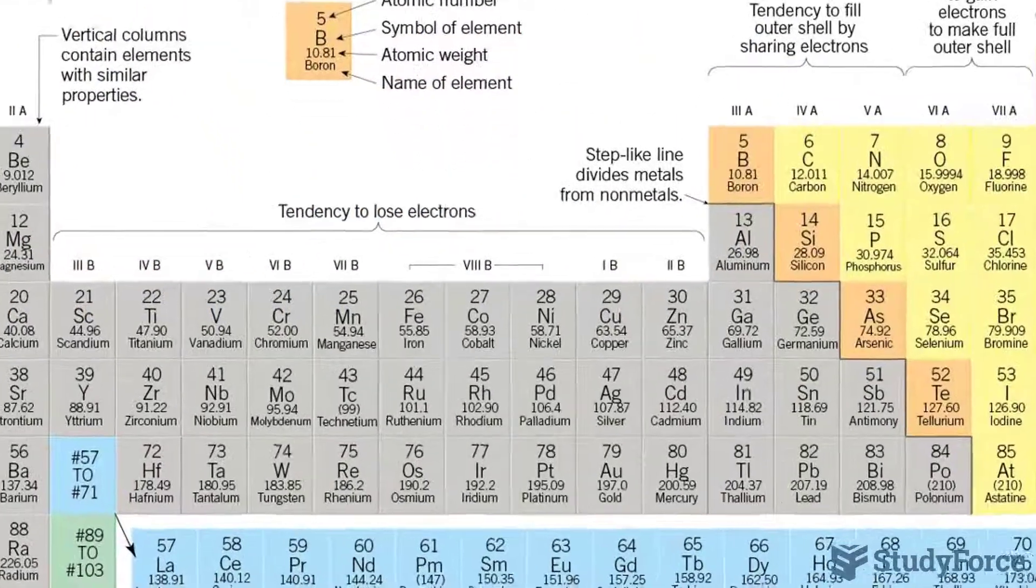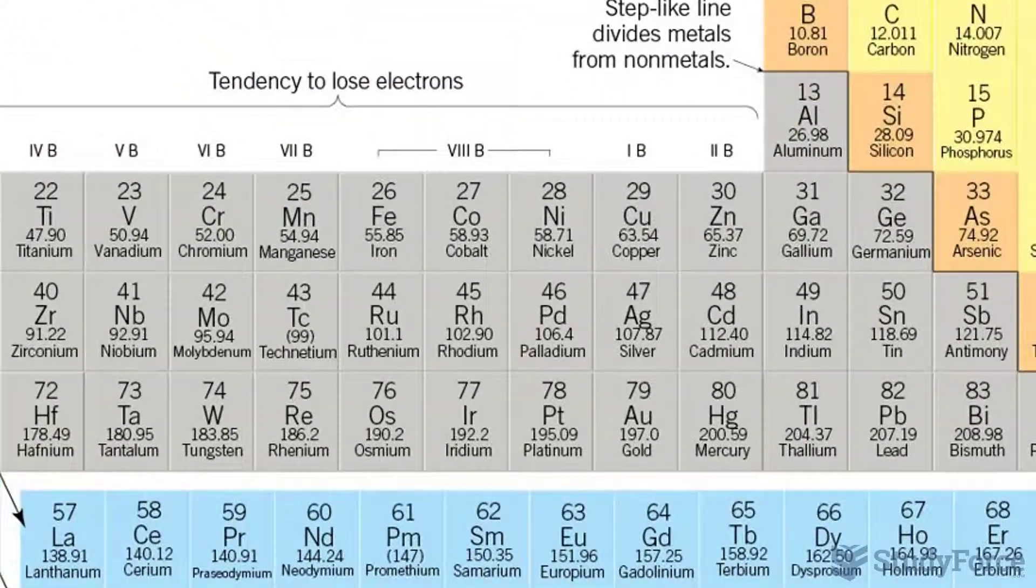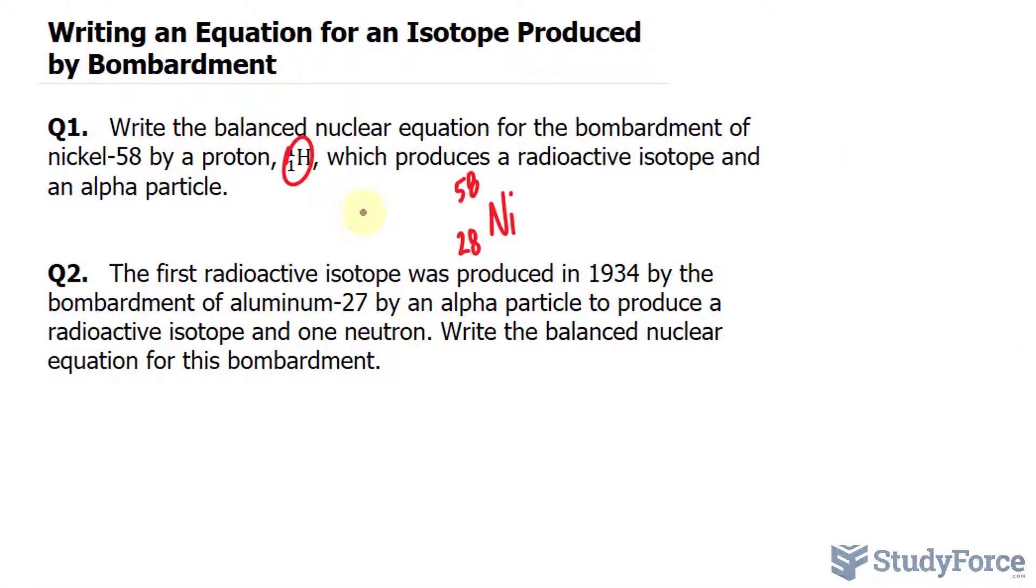Nickel is the 28th element on the periodic table and it's being bombarded by a proton. So we can write down H-1-1. Now with nuclear equations, you want the atomic mass and the number of protons to be equal. We are told that an alpha particle is emitted. And alpha particles, as discussed in one of our previous videos, is shown as helium. Helium has an atomic mass of four and two protons.